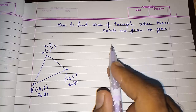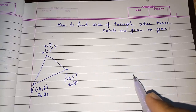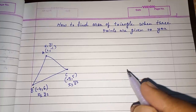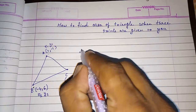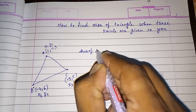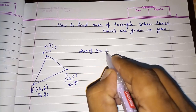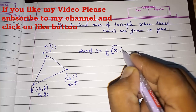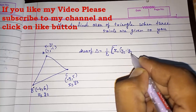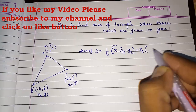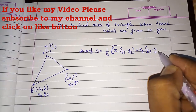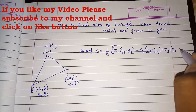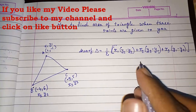There is one formula that I will tell you, and I will also tell you how to easily remember it and where students generally make mistakes. Please watch the whole video. The formula for finding the area of a triangle when three coordinates are given is: one-half times [ x1(y2 − y3) + x2(y3 − y1) + x3(y1 − y2) ].